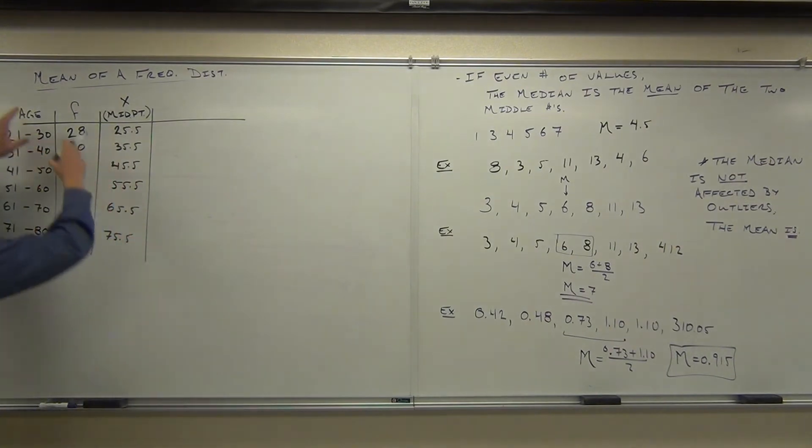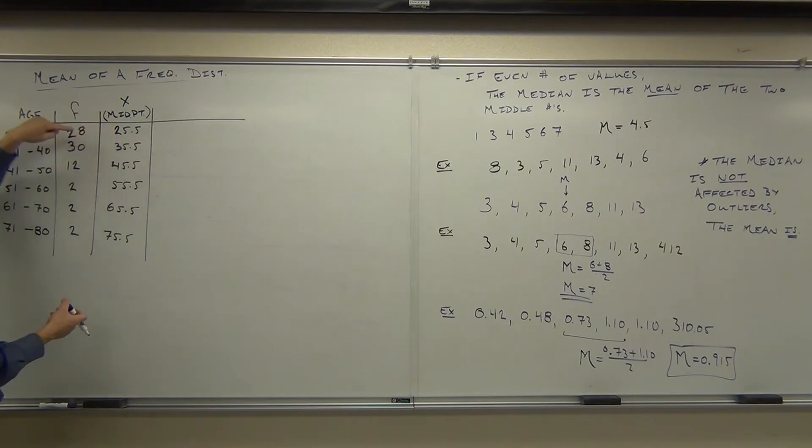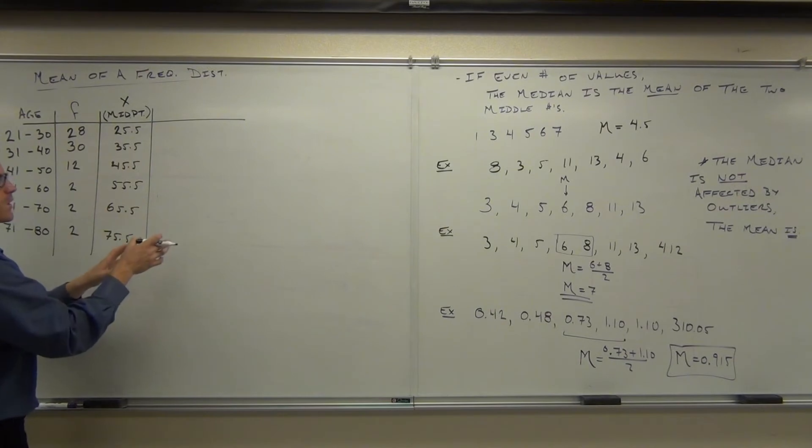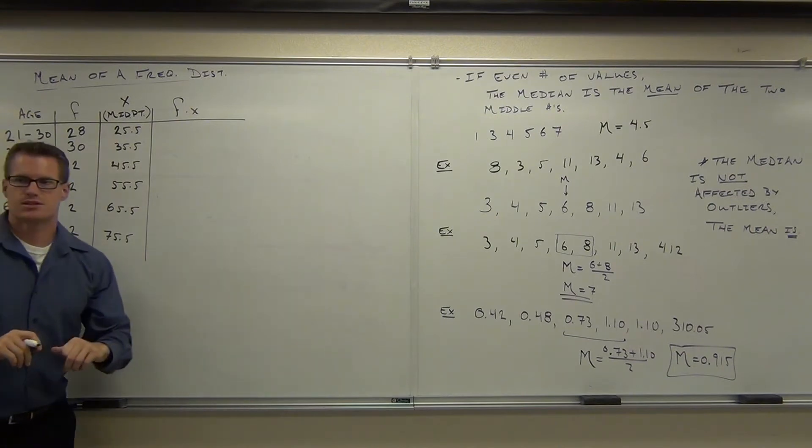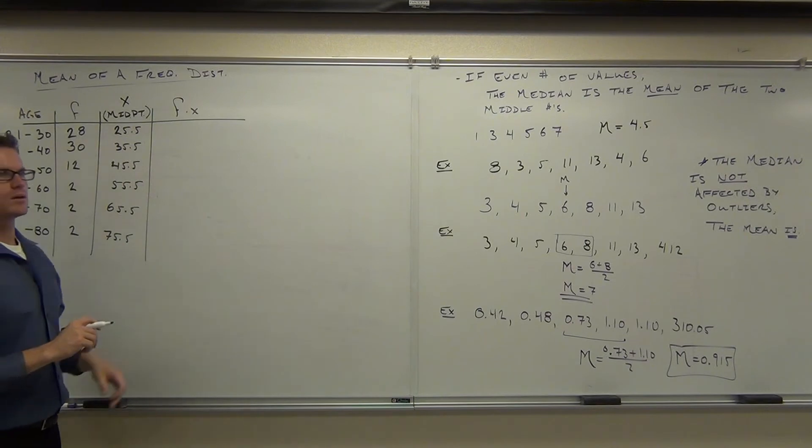We don't know the age of every single person here, so what we do is we pick the middle of our class, and we're going to pretend right now that every person, all 28 people, were 25.5 years old, okay? And every person here, all 30 of these people were 35.5 years old. Do you get the idea? That's the only way we can calculate it. And so what we're going to do in order to figure out our average, we're going to multiply f times x. That gives us all 28 at the age of 25.5. So you're multiplying the age of each person times all those people. So multiply this out. Let's do this quickly here.